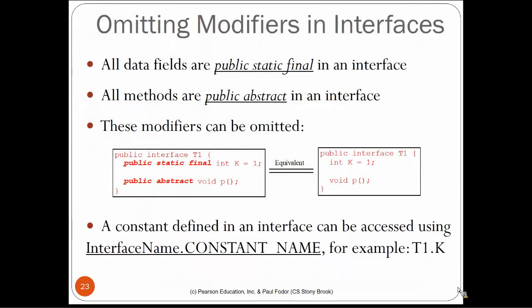We can omit modifiers in interfaces because all data fields are implicitly public static final, and all methods are implicitly public abstract. Writing public static final before constants is equivalent to just defining the constant. Constants can be accessed using InterfaceName.CONSTANT_NAME, as we did with Calendar.YEAR, Calendar.MONTH, etc.